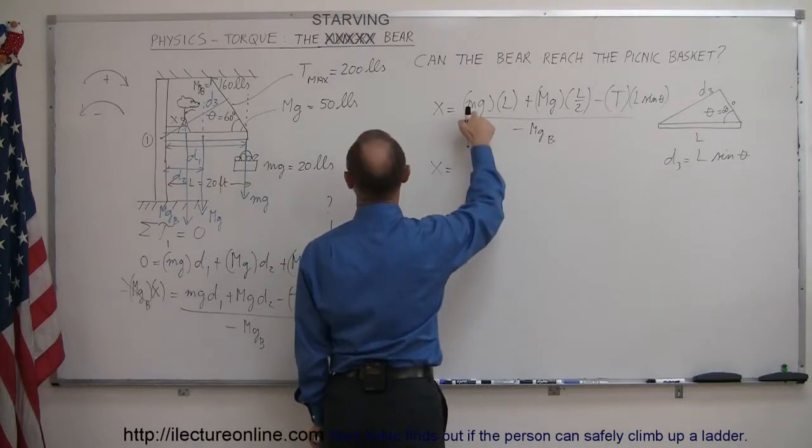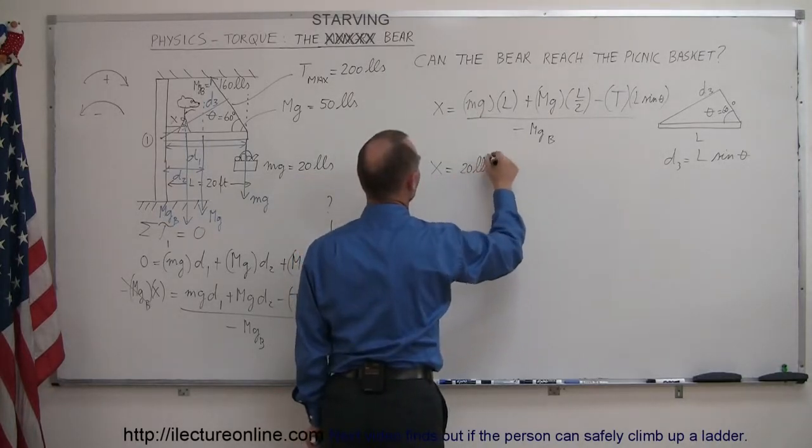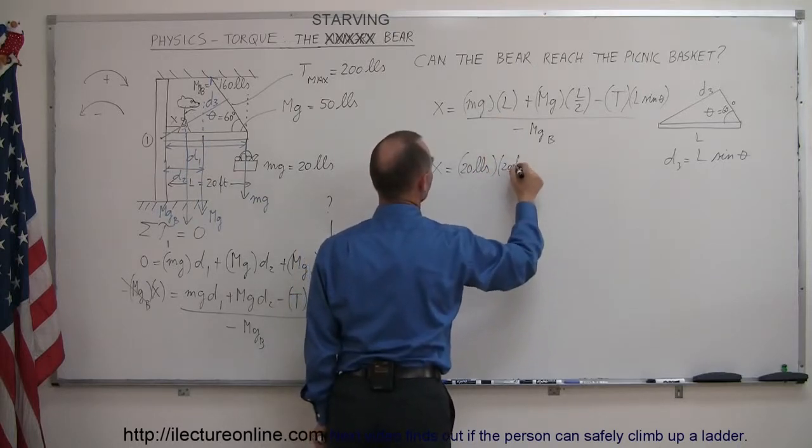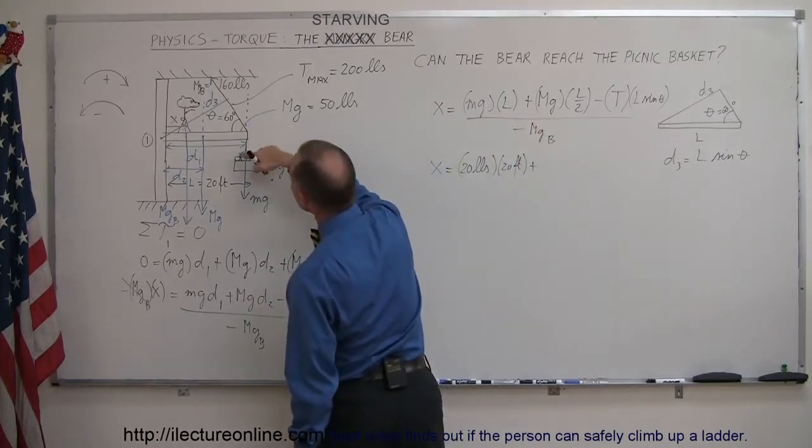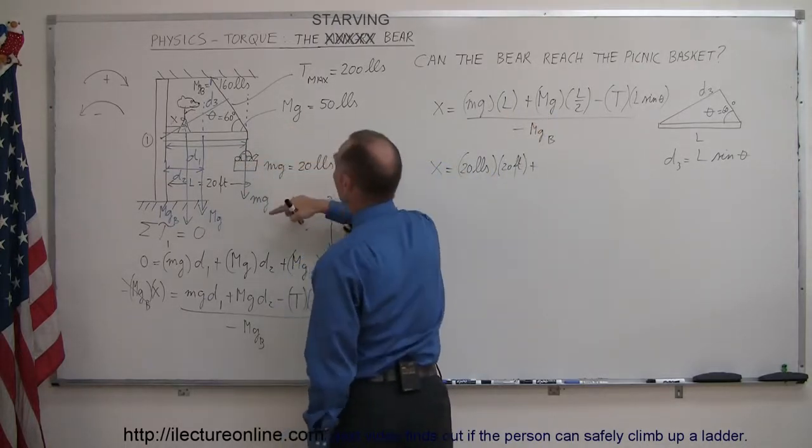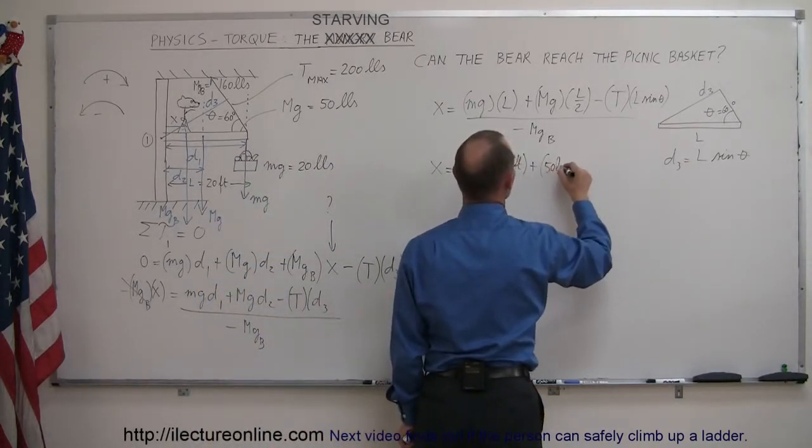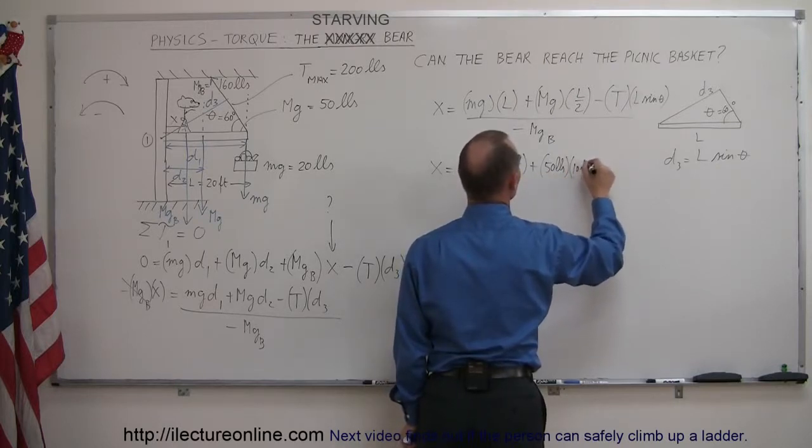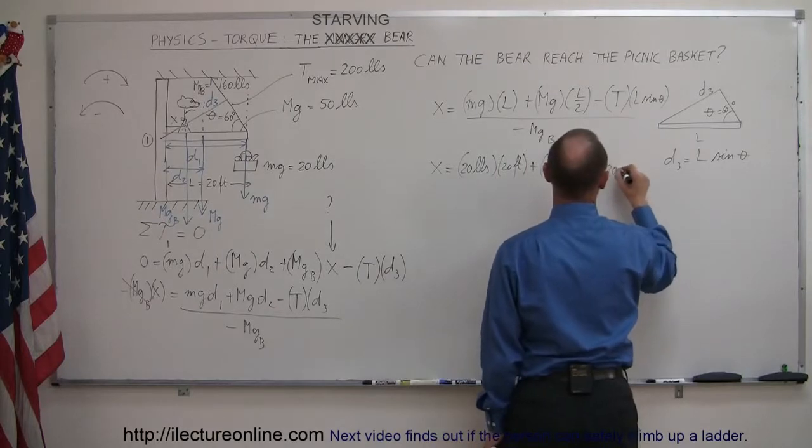X equals little MG, that's the weight of the basket, that's 20 pounds, times the length of the beam which is 20 feet. Plus the weight of the beam, which is 50 pounds, and half the length of the beam which is 10 feet.